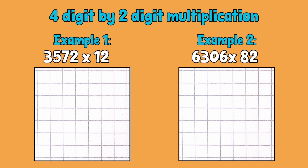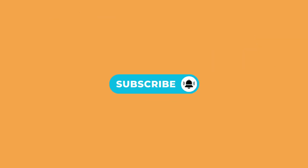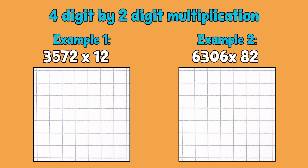Right, let's get into it. So let's get going with our first example. I've got 3572 multiplied by 12, and before we start it's going to be really important to get our place value headings in there. If you've not got any squared paper like I've got, then definitely put those in because it'll help you to keep everything in line. So I'm going to put those in: ones, tens, hundreds, thousands, ten thousands, and hundred thousands.